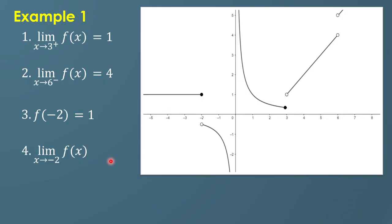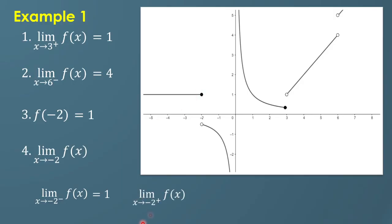Another example: the limit of f of x as x approaches negative 2. Since we don't have a superscript, we consider the two-sided limits. The left-hand limit as x approaches negative 2 gives y values approaching 1. The right-hand limit as x approaches negative 2 gives y values approaching negative one-half. Since the left-hand limit is not equal to the right-hand limit, the limit does not exist (DNE).